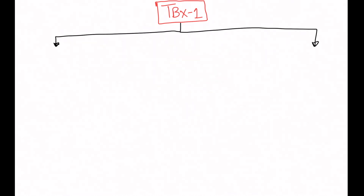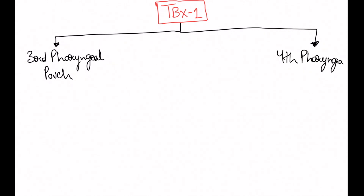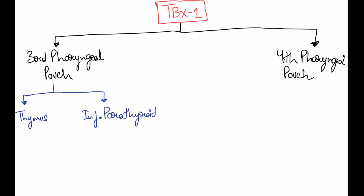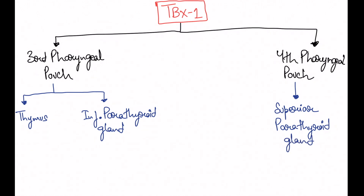It's very high yield to know the derivatives of pharyngeal pouches. In the third pharyngeal pouch, we have development of the thymus and the inferior parathyroid glands. In the fourth pharyngeal pouch, we have the superior parathyroid gland. The parathyroid gland is responsible for calcium homeostasis.